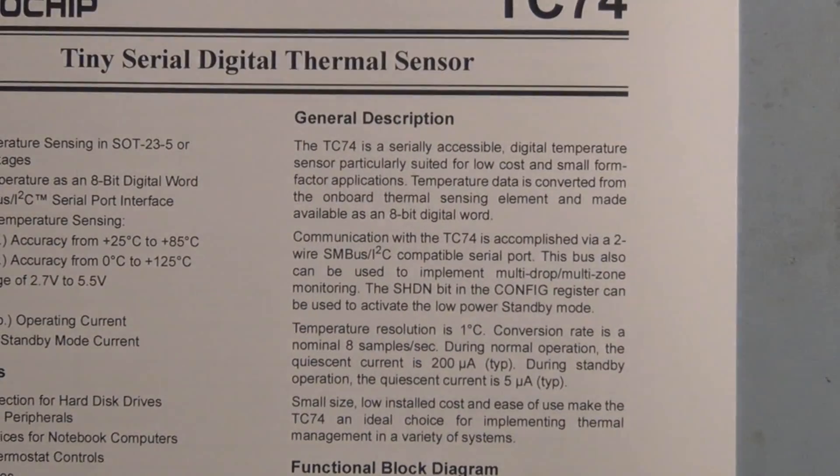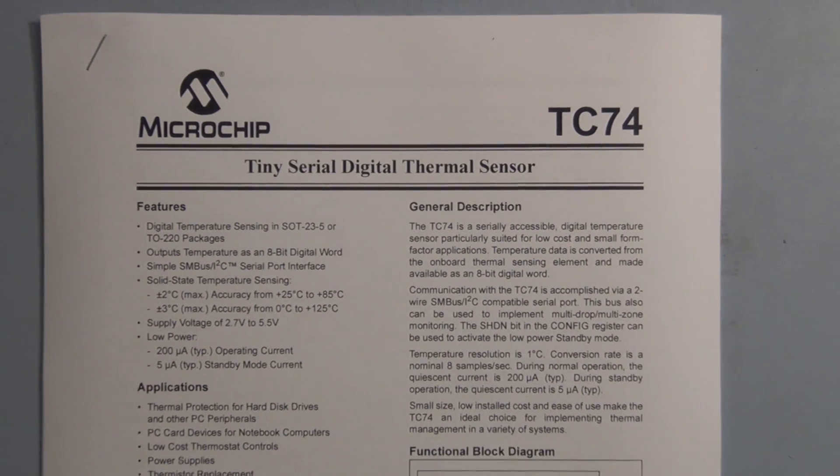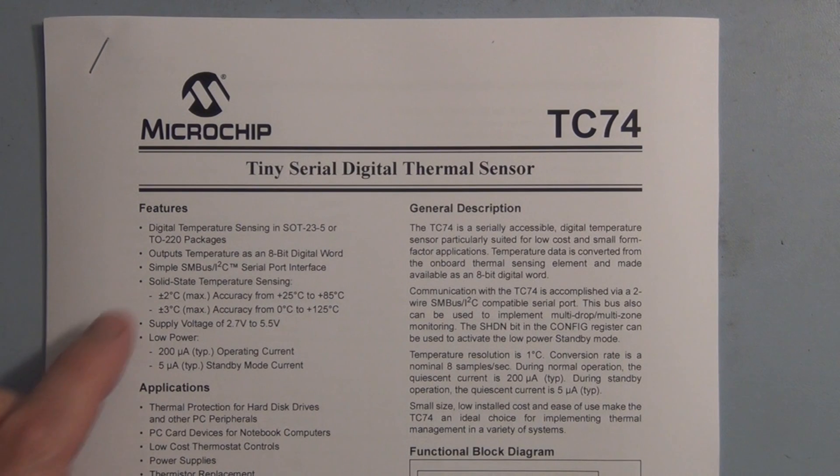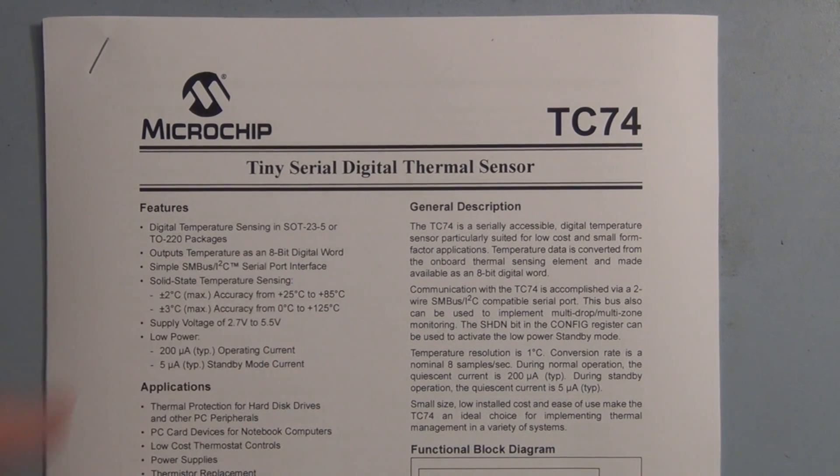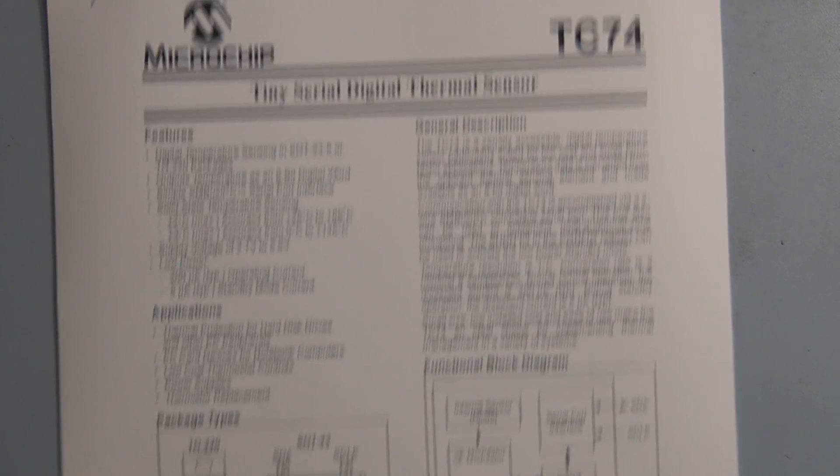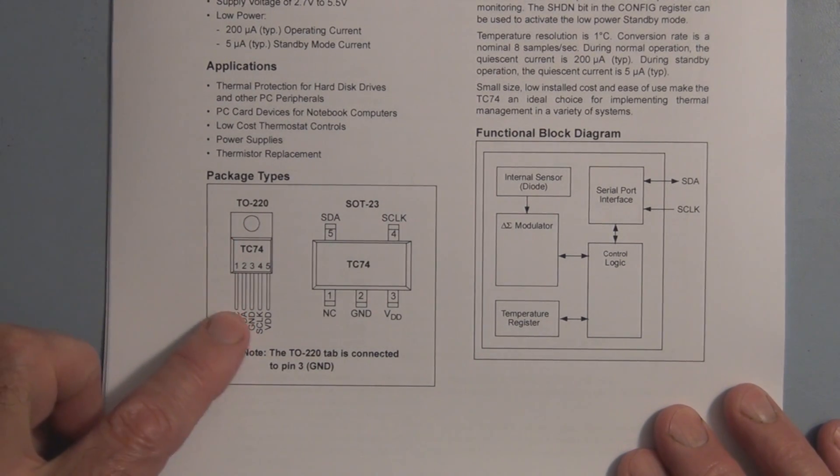So let's take a quick look at the data sheet for this digital temperature sensor. And here it is. It's a TC74 and it's a digital temperature sensor. The one that we have is actually in what they call a TO220 package. So it looks like a MOSFET or an amplifier.